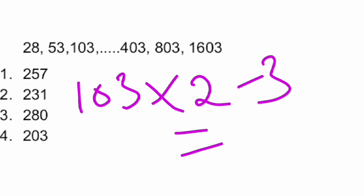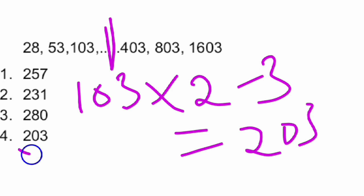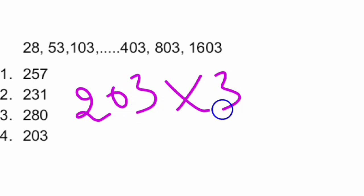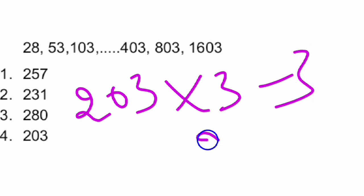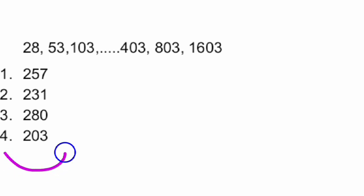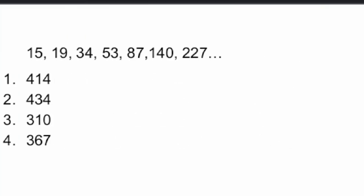103 × 2 − 3 = 206 − 3 = 203. And verifying: 203 × 2 − 3 = 406 − 3 = 403. So our answer is 203. The missing number is 203. Next question: the series is 15, 19, 34, 53, 87, 104, 140, ___, 227.